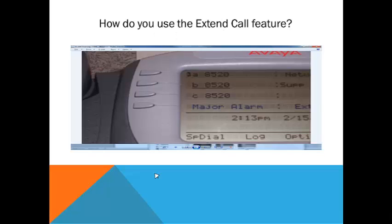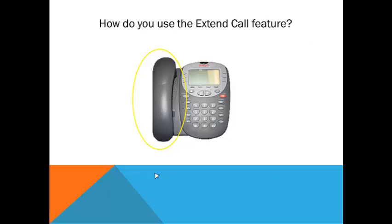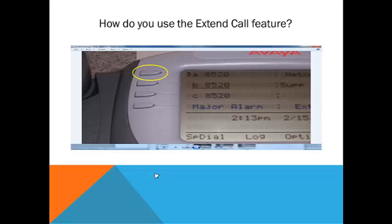If you have EC500 turned on and have answered the call on your mobile device, you can easily switch back to your office phone. There is an off-hook symbol to the left of the extension number showing that there is a call in progress. Pick up the office phone handset and press the line button to be connected with the caller. You can then end the call on your mobile device. The caller will be unaware that the transfer has taken place.